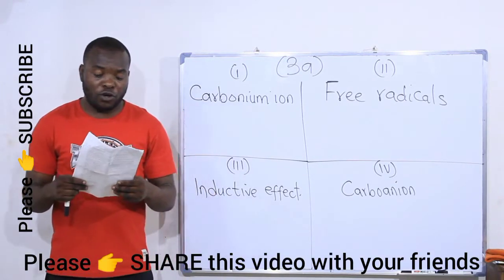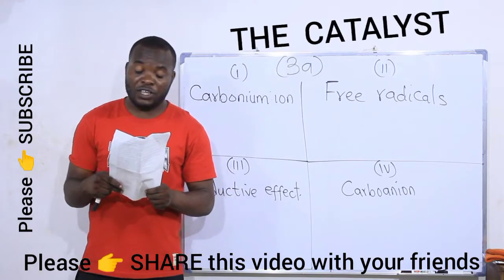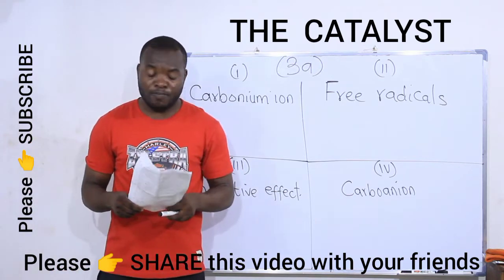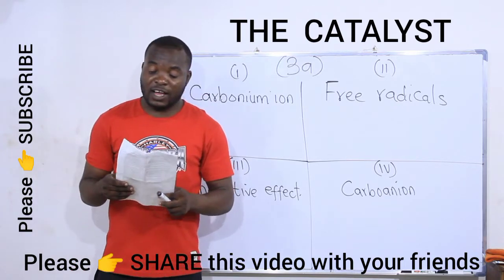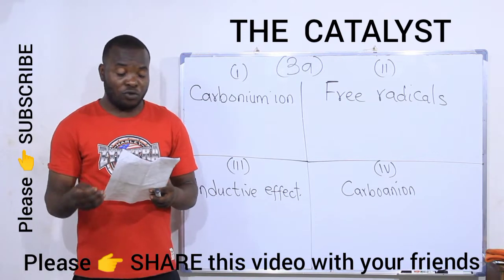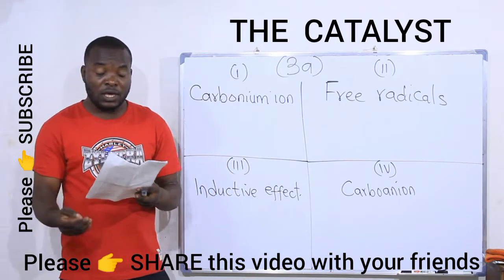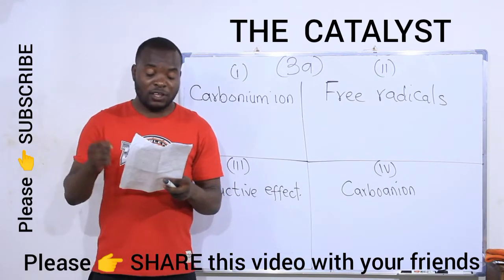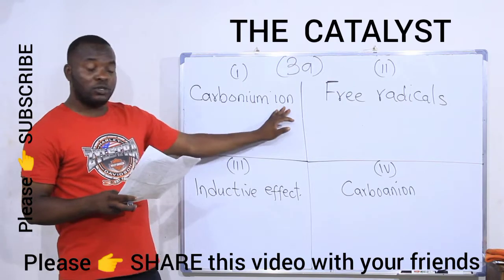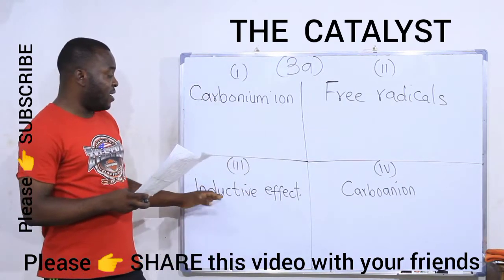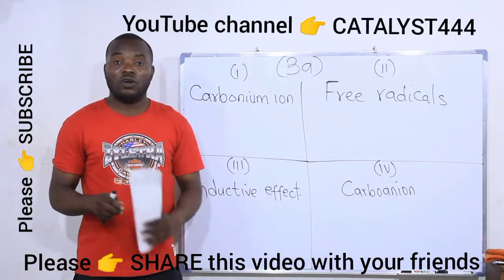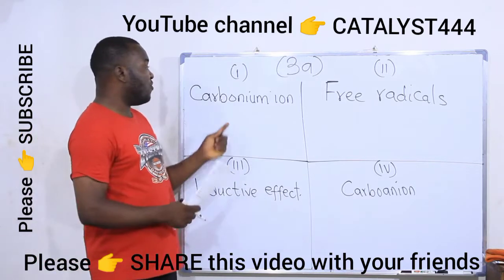In this video we are going to solve question number 3a. We have been solving the exam question paper of Imo State University, Chem 102 — organic chemistry — for the 2019-2020 academic session. We have already solved questions 1a, 1b, 2a, 2b, and 2c. Now we are on question 3a, which asks us to define: (i) carbonium ion, (ii) free radicals, (iii) inductive effect, and (iv) carbanion.